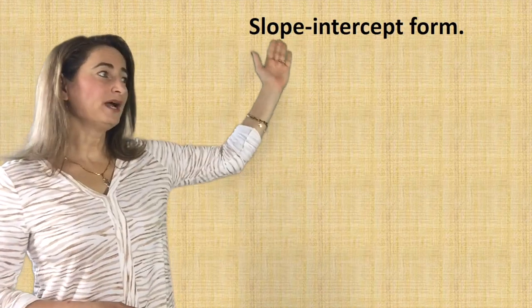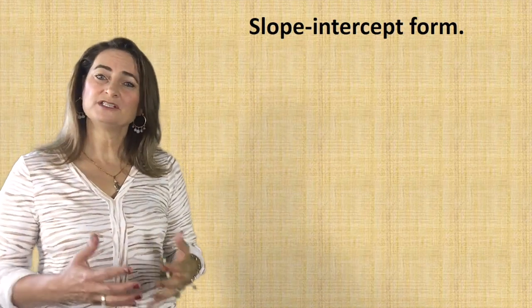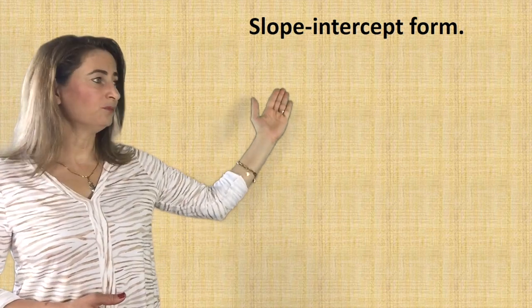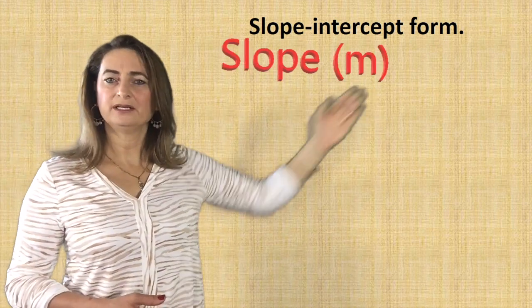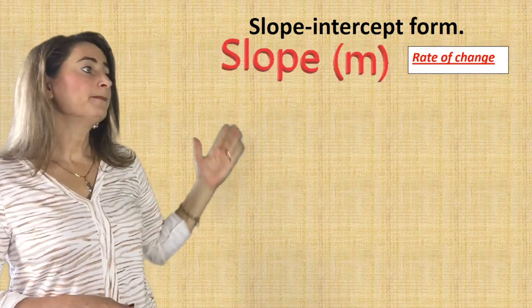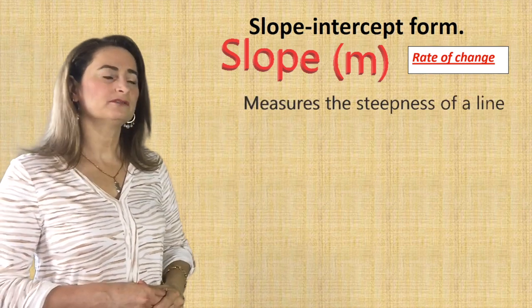So now to write an equation in slope-intercept form, the first thing to do is to find the slope, which is m. As a reminder, it's called the rate of change. The slope measures the steepness of a line.